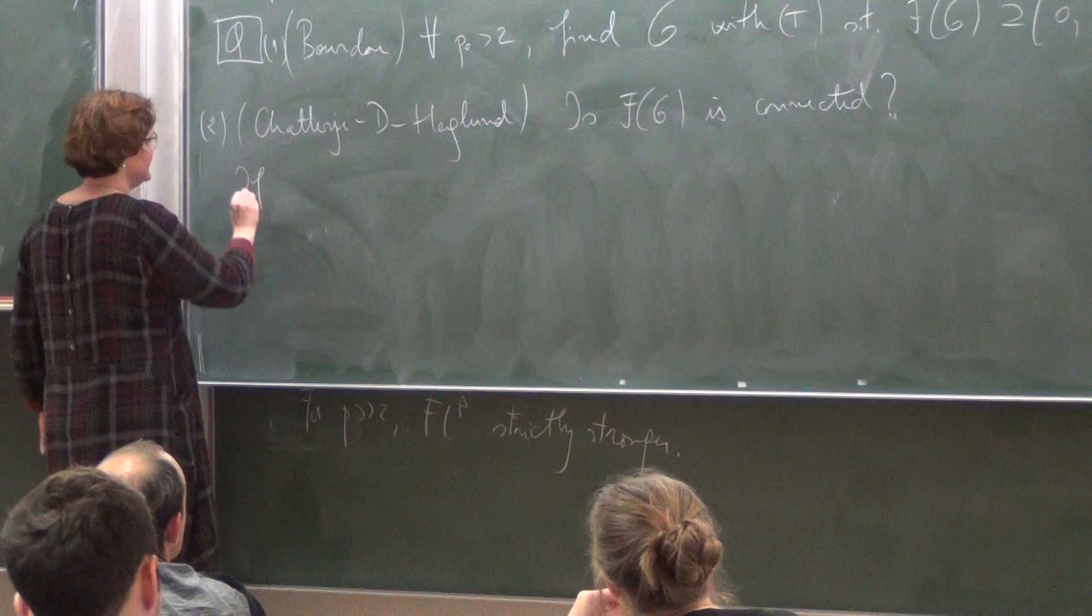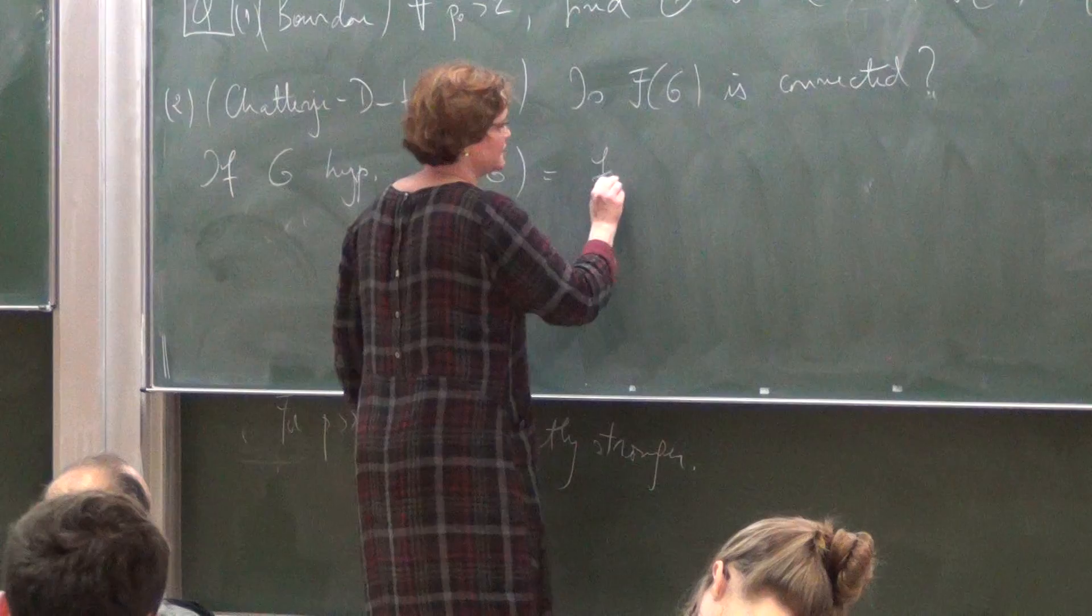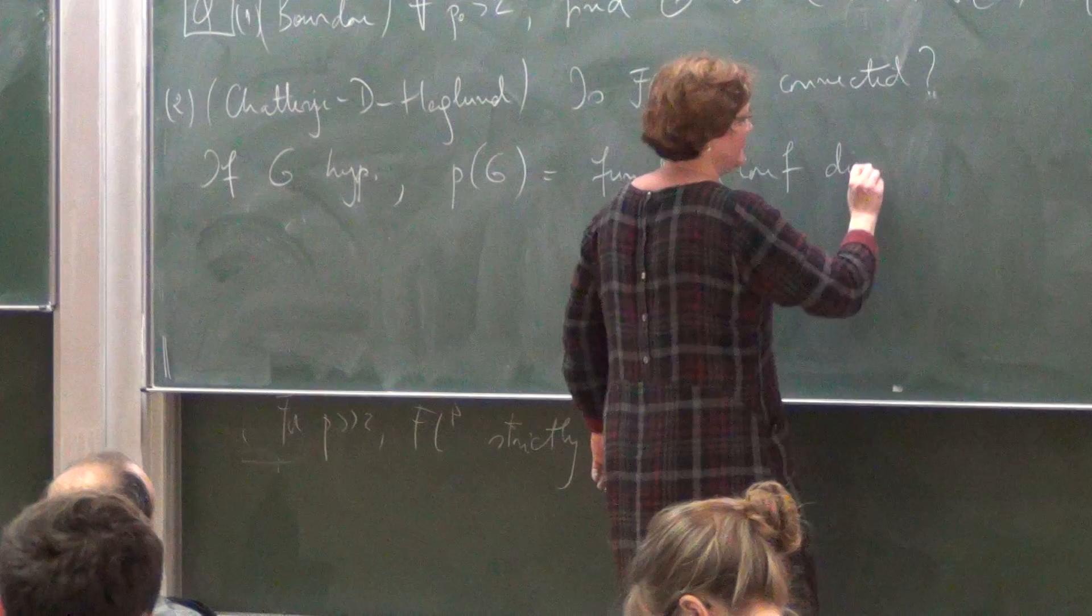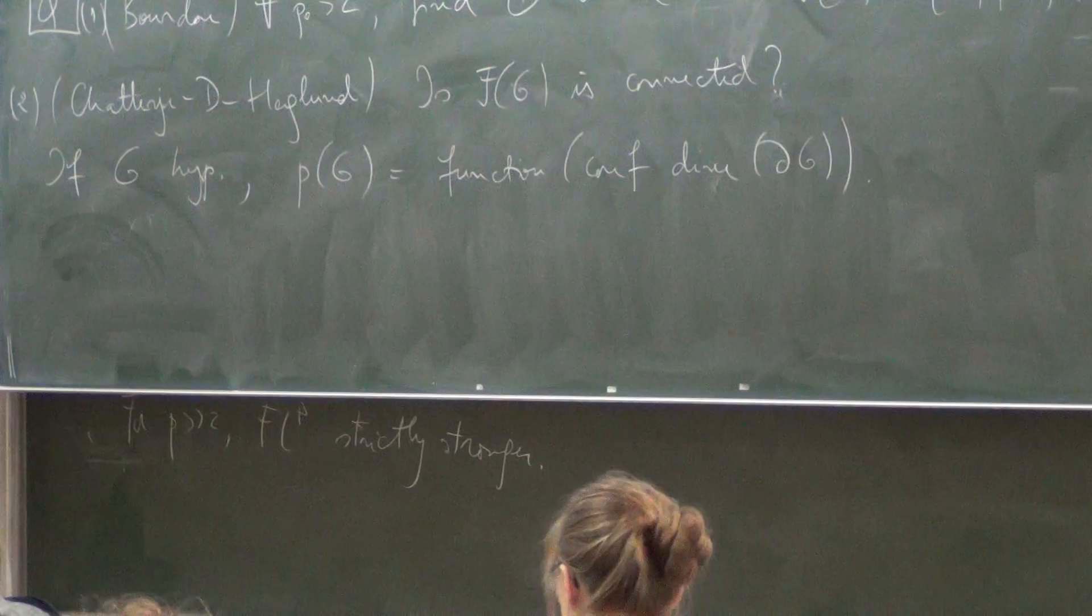So now, this is the one thing, and then the second one, well, it kind of makes sense. If g is hyperbolic, is there any relation between this maximum, so is this a function of the conformal dimension of the boundary of the group? Okay, I've got my convention, so of course right now, again, hyperbolic means finitely generated hyperbolic.